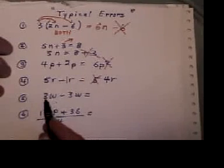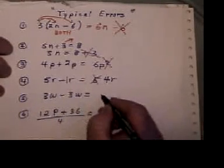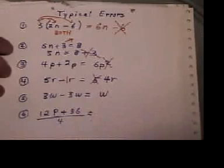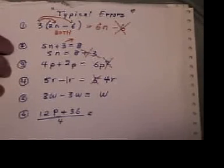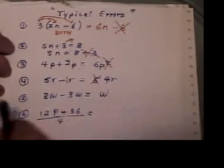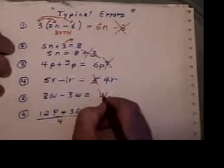The next error, 3w take away 3w, I've seen students leave it with a w. They say 3 minus 3 is 0, so I don't have to put it down, but you'll leave it as a w. Error.